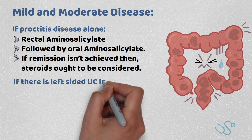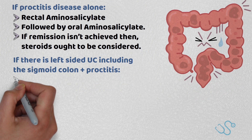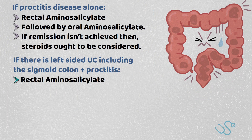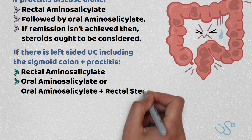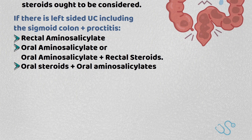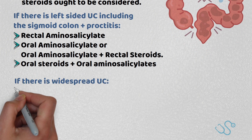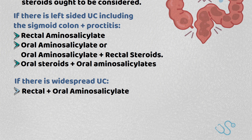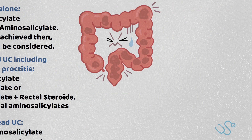If it's predominantly left-sided UC, including the sigmoid colon and proctitis, rectal aminosalicylates are first-line, with oral tablets second, or a combination of oral aminosalicylates plus rectal steroids. If there's widespread UC, the first-line treatment is typically rectal and oral aminosalicylates, with a second-line treatment of oral steroids in addition to oral aminosalicylates.